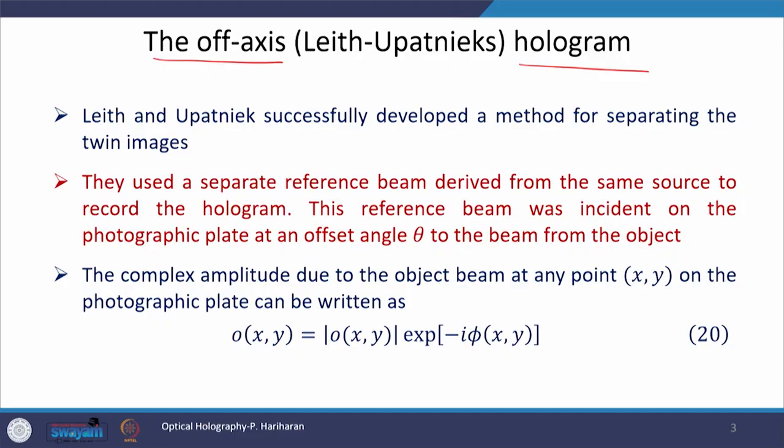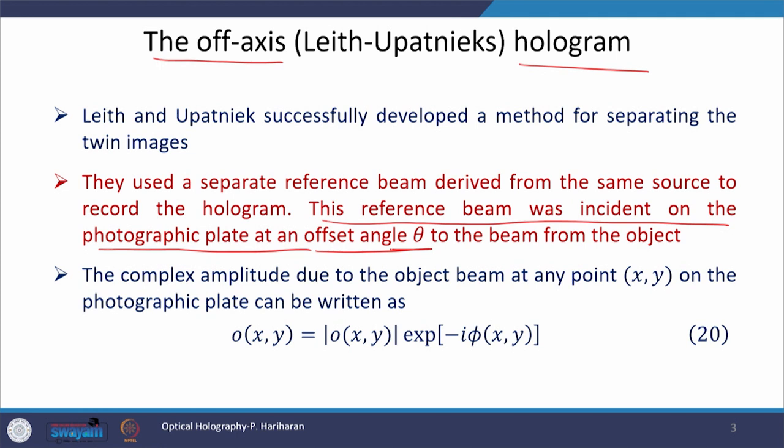Leith and Upnaik successfully developed this method and they were successful in separating the twin images — the virtual image and the real image — which were overlapping in the on axis hologram. Leith and Upnaik used a separate reference beam derived from the same source to record the hologram. In the on axis hologram, one source illuminated a semi-transparent object and the part of the light transmitting through it worked as a reference beam. But here, a separate reference beam was used along with a separate beam that goes to the object and gets scattered. These two beams combine at the photographic plate, but both originate from the same source.